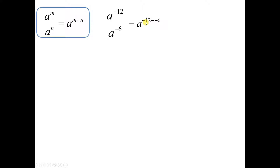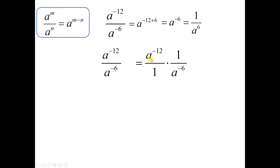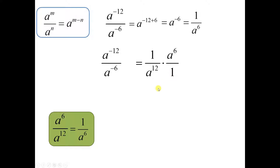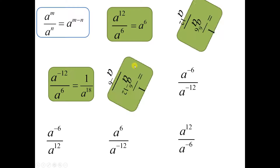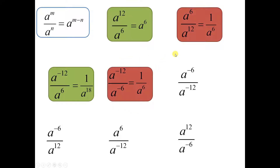Expression 4: a to the negative 12th divided by a to the negative 6th. Using the shortcut, it's going to be a to the power of negative 12 minus negative 6 — and this is where people mess up. There's a minus in this shortcut; it's the top minus the bottom. The denominator happens to be negative 6, but that negative 6 does not replace the subtraction sign, so this is going to become addition: negative 12 plus 6 is negative 6. You need to rewrite that as repeated division, giving 1 over a to the 6th — which happens to be the same as expression 2. So these two are the same, even if they didn't look it at first.